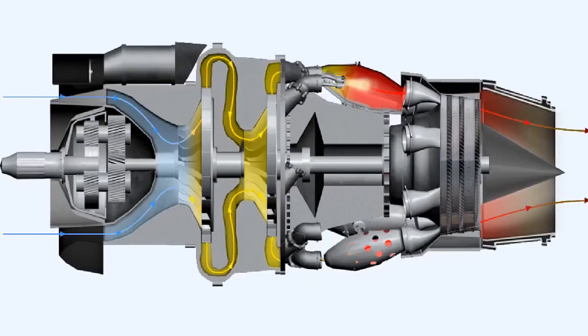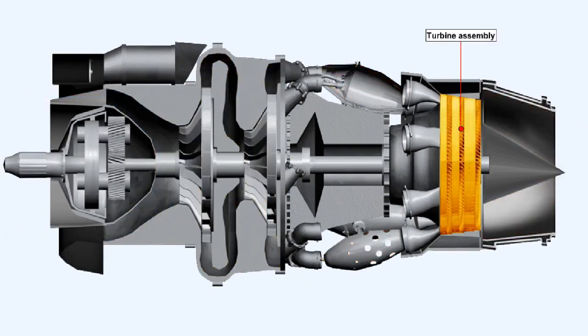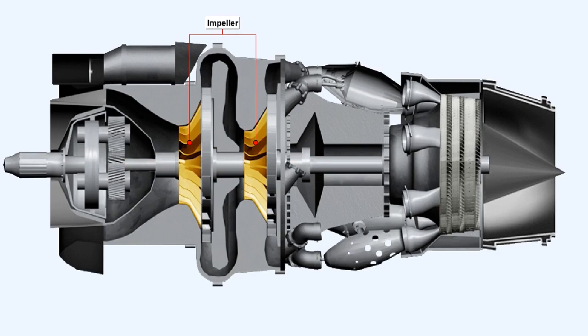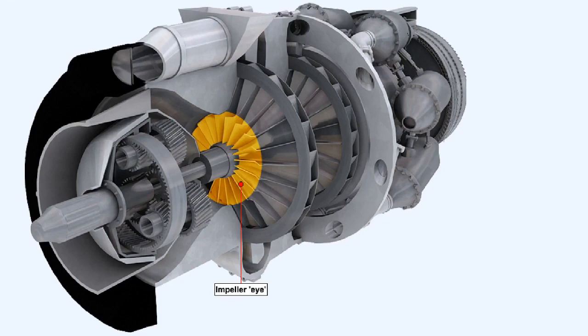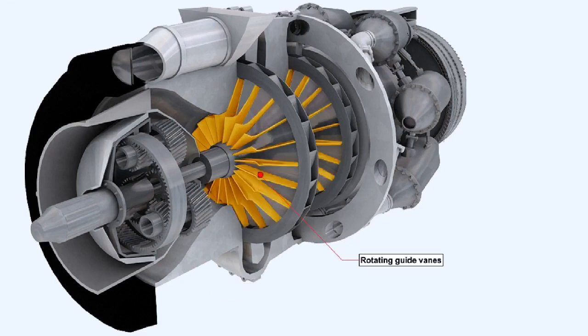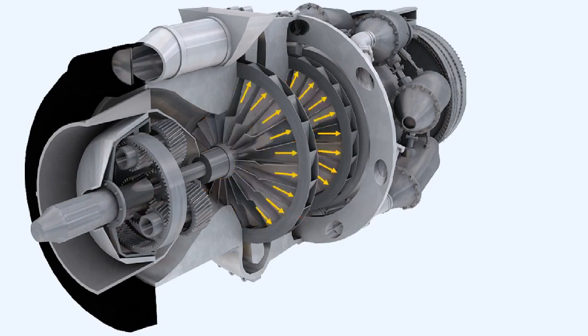We'll now examine the principles of the centrifugal compressor. The turbine assembly, attached to the compressor by a shaft, converts the pressure, velocity and heat of the gases passing through the turbine into mechanical energy, which is used to drive the impeller of the compressor round at high speed. Air is introduced continuously into the eye — the center of the impeller — by rotating guide vanes, and centrifugal force causes the air to flow outwards across the impeller towards the tip.